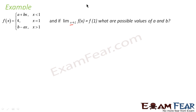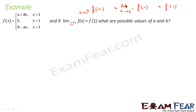That means we can say that for f(x) the left hand limit is equal to the right hand limit is equal to f(1). The right hand limit of this function at x equal to 1 is equal to the left hand limit of this function at x equal to 1, is equal to 1. So first let us find the left hand limit and right hand limit.